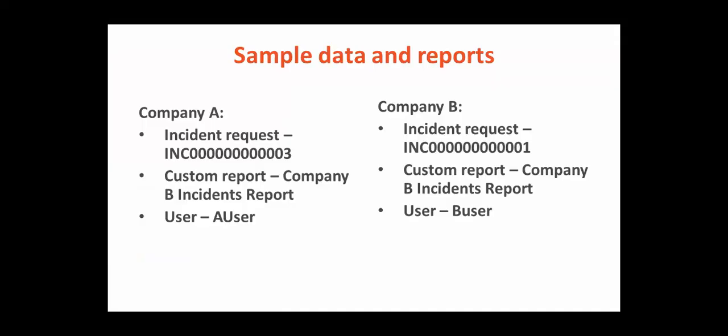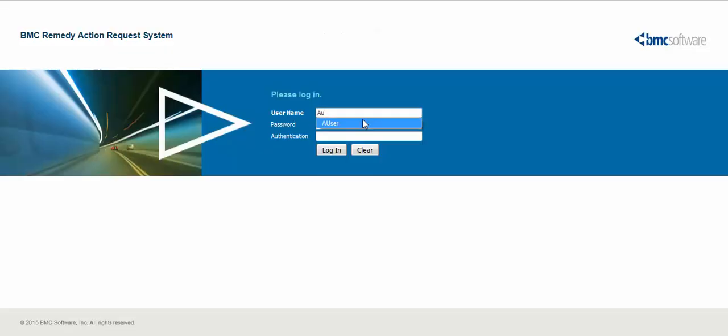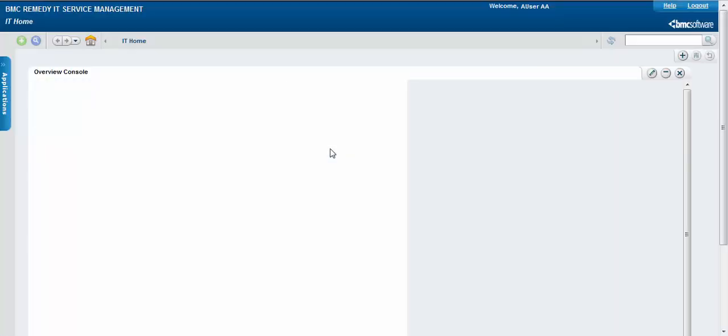Let us now verify the data security for multi-company onboarding. For the purpose of this demonstration, let us consider incident record 003 and a custom report in Smart Reporting named company A incident report, which belong to company A. Similarly, incident record 001 and a custom report named company B incident report belong to company B. Log on to the BMC Remedy mid-tier as A user, the reporting administrator for company A defined during onboarding.